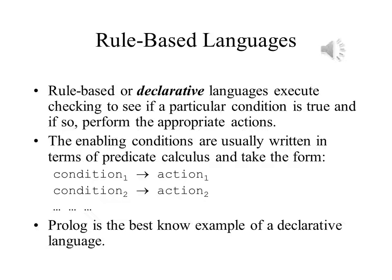Declarative languages are rule-based, and they perform checking to determine if a particular condition is true, and if and when a condition is true, it carries out the appropriate actions. Most declarative languages, such as Prolog, are written in terms of predicate calculus, where a predicate is a property of a data item or the relationship between two or more data items. These lead to a structure where a particular condition leads to a particular action.